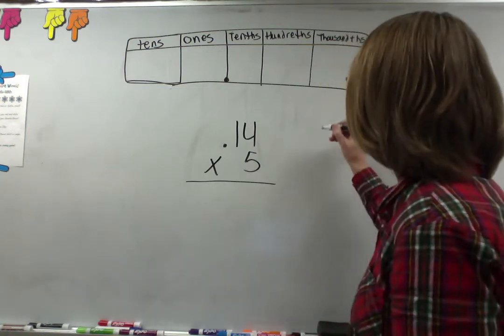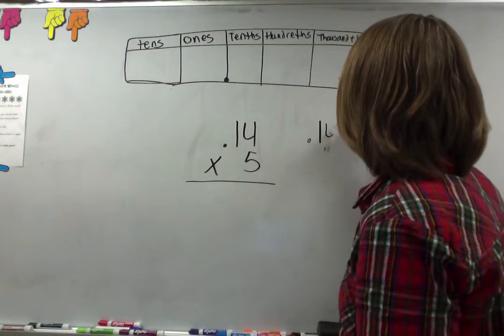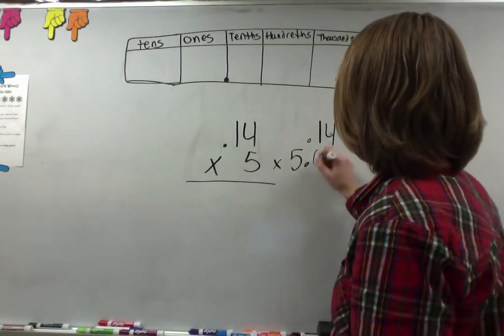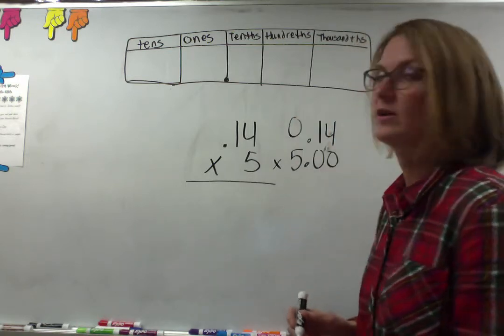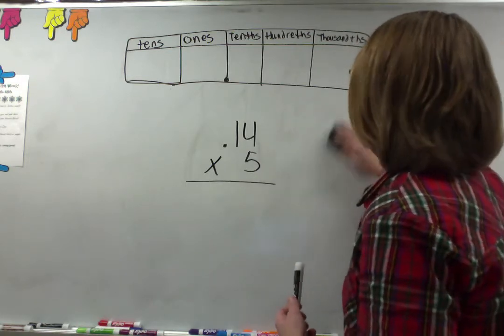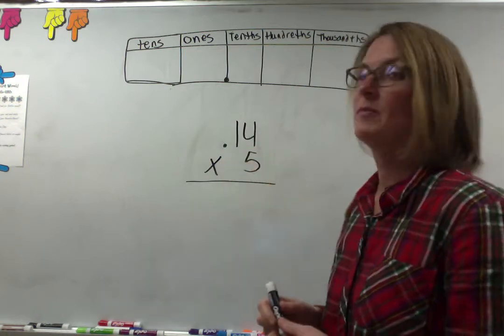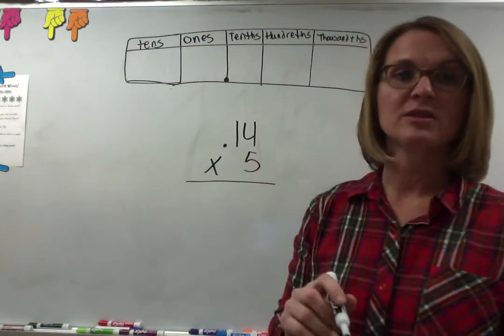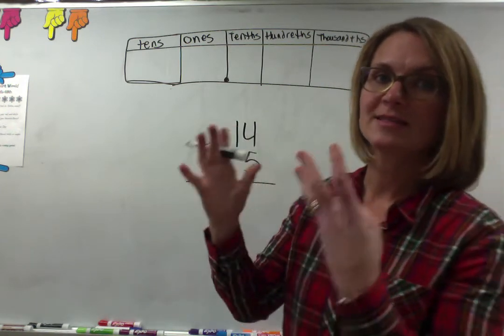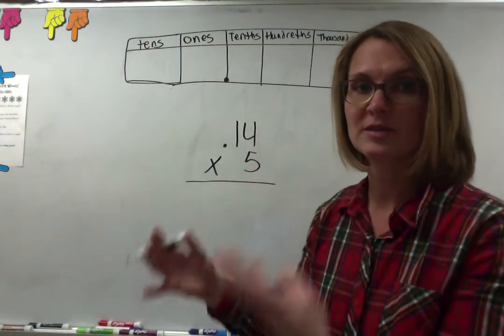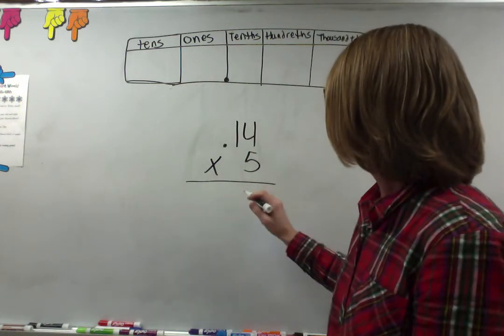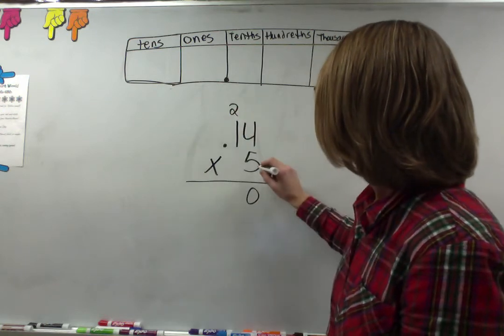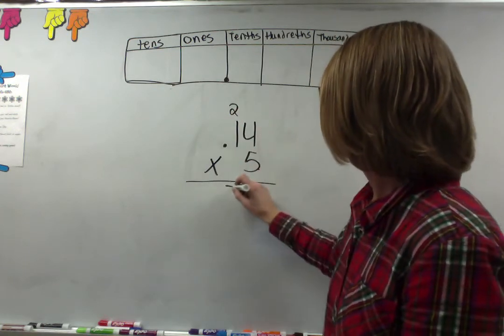You can just line them up like you would a regular multiplication problem and you're going to ignore that decimal to the end. So if you're ignoring that decimal until the end then all you're going to do is multiply. So you do 5 times 4, which is 20. Put down the zero, carry the 2. Then you do 5 times 1 which is 5 plus 2 which is 7.